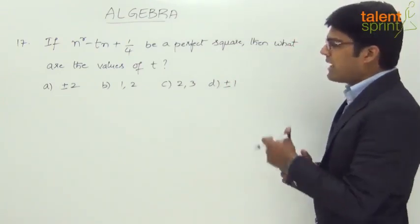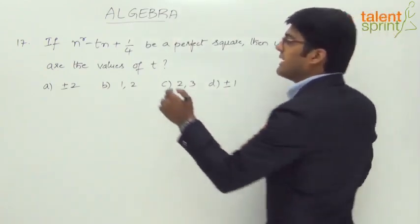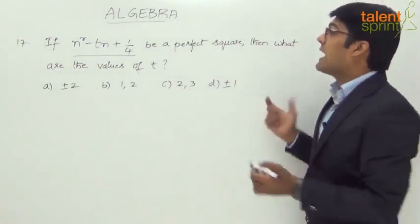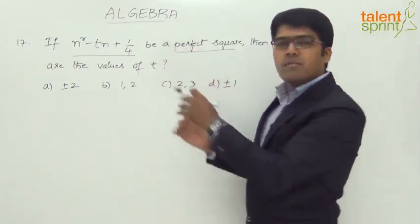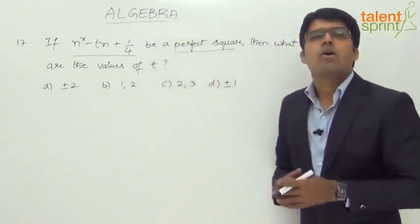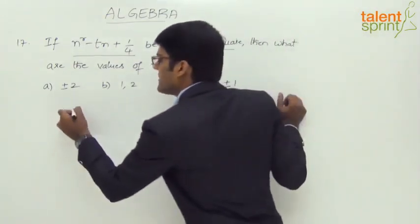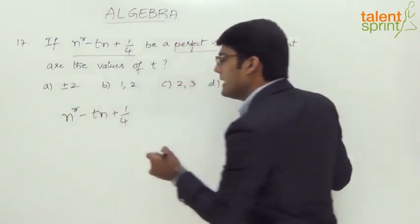So here the expression n^r minus tn plus 1/4 has to be a perfect square. Now again, like the previous case, we just need to express this in the form of (a minus b) whole square or (a plus b) whole square.